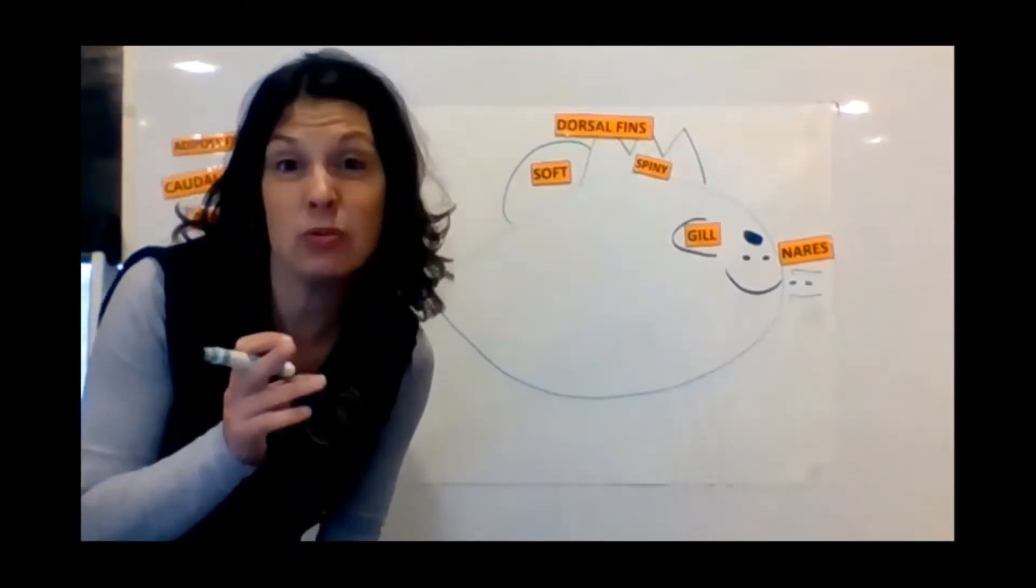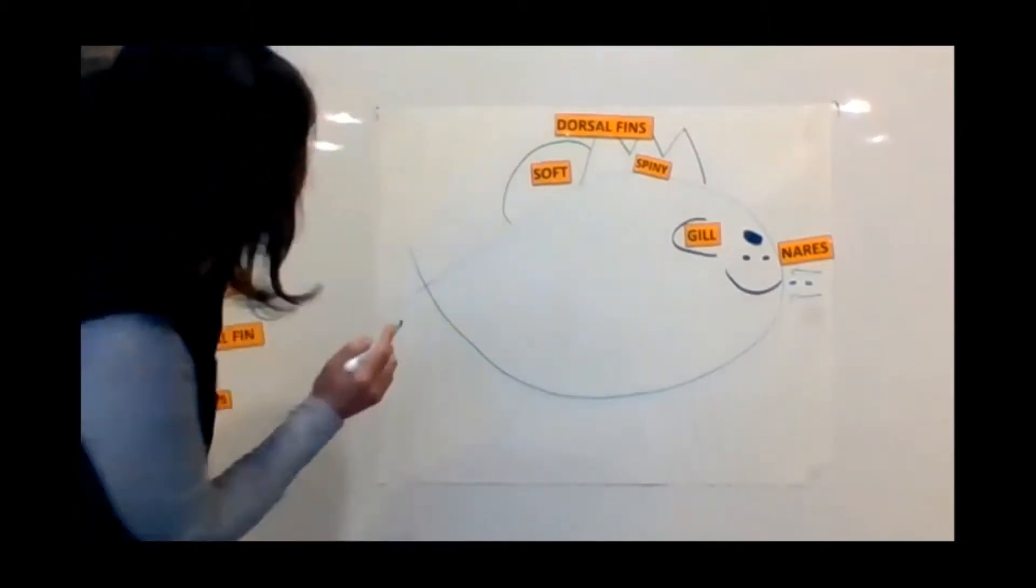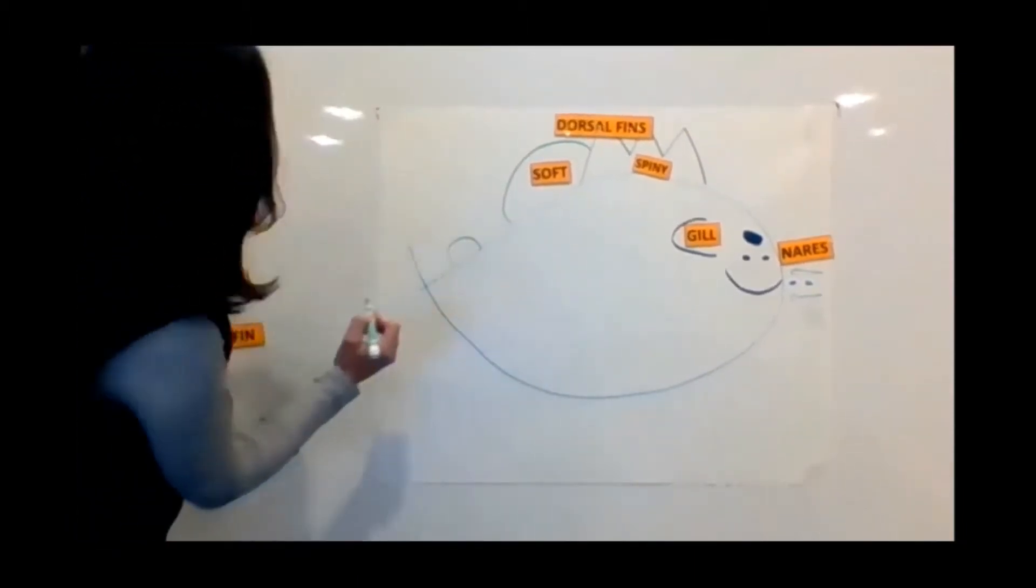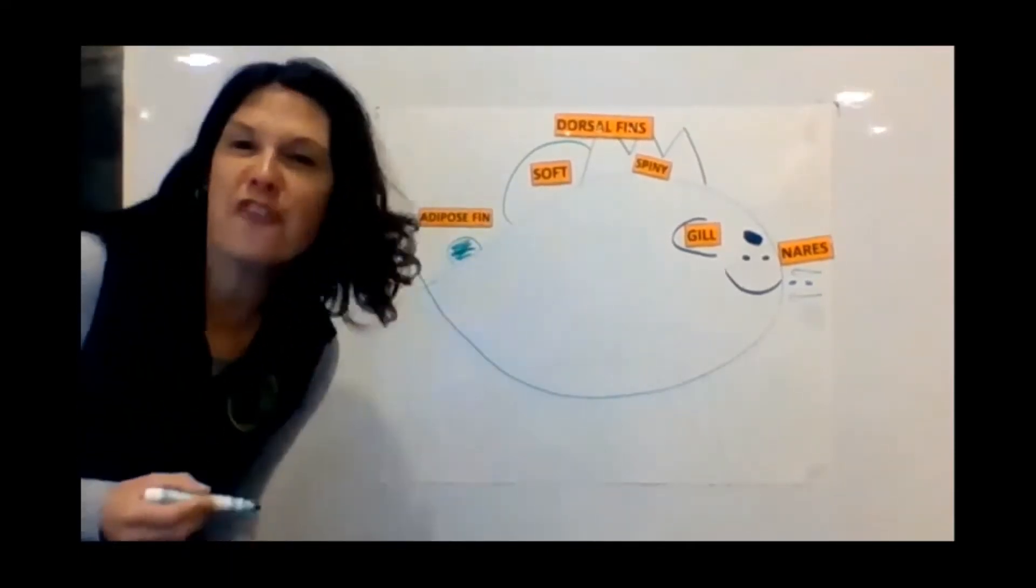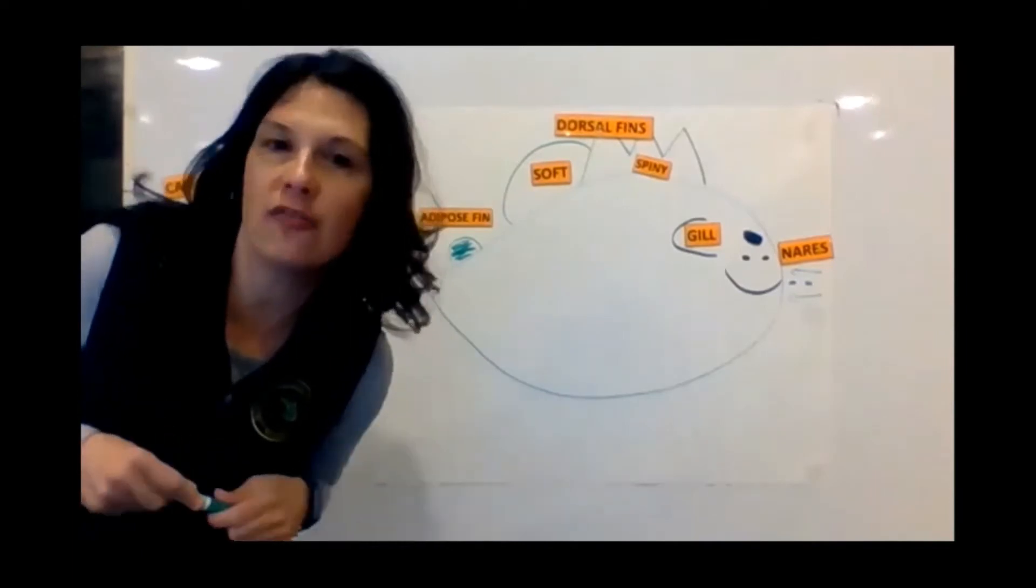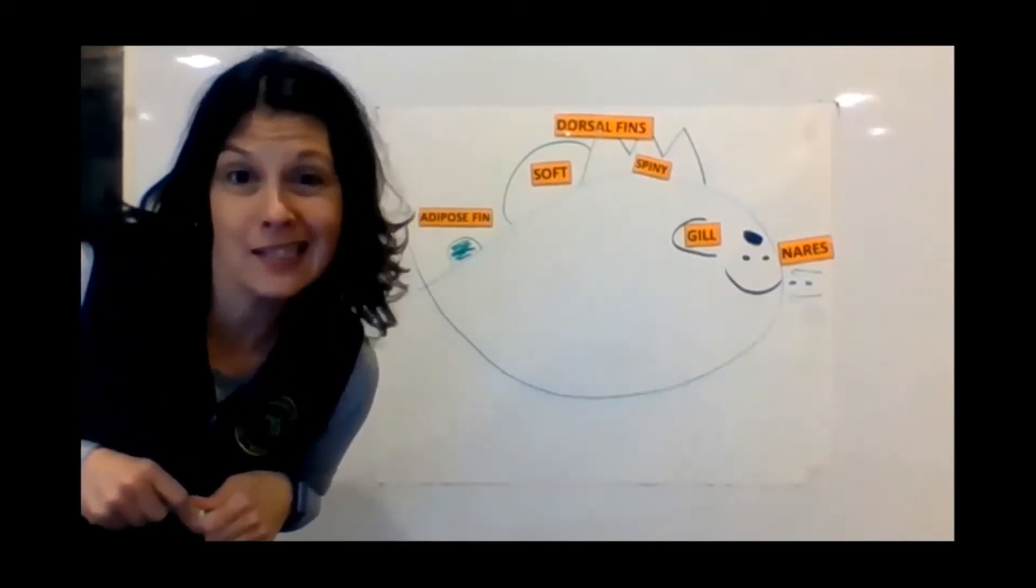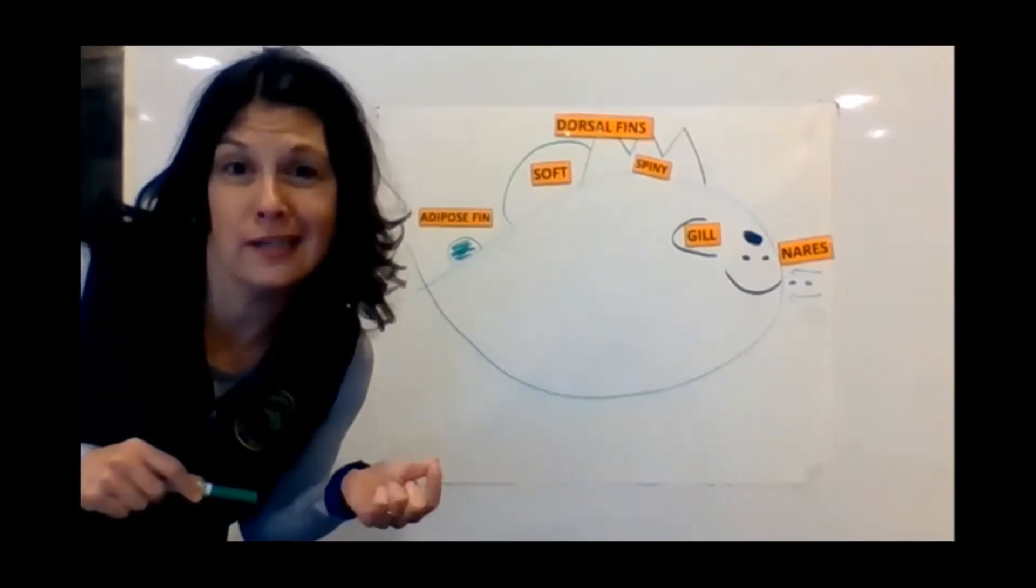And if you're a salmon or a trout, you have an extra fin back here called an adipose fin. A little fatty fin that fish in the salmon and trout family have. And get this, scientists aren't exactly sure what it does, but they do have it.